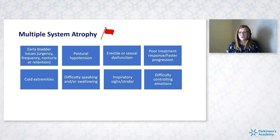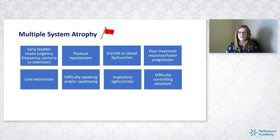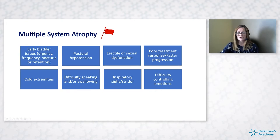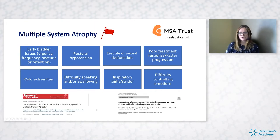MSA can also result in difficulty with speaking and swallowing early in the diagnosis, which we wouldn't expect to see so early with straightforward Parkinson's. Some people report stridor — it's really helpful to ask partners about changes to breathing overnight. Some people with MSA also have difficulty controlling emotions such as laughing or crying. Other red flags include poor response to treatment and fast progression. The MDS produced new diagnostic criteria published earlier this year which is worth reviewing, and the MSA Trust has fantastic information for healthcare professionals and patients.